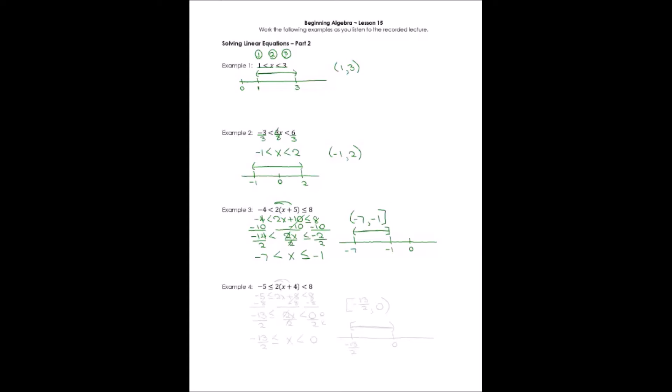Example four, more distribution of multiplication. Negative five is less than or equal to two times x and two times four. And that's less than eight. We need to isolate this variable term. We've got to get rid of an eight that's added to it. So we'll subtract eight.